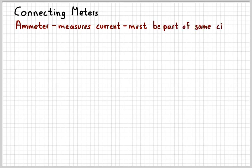So when we connect meters, we're going to use multimeters in class to measure these things. The thing that we need to know is that an ammeter, which measures current, has to be connected in part of the same circuit loop as the thing that's being measured.